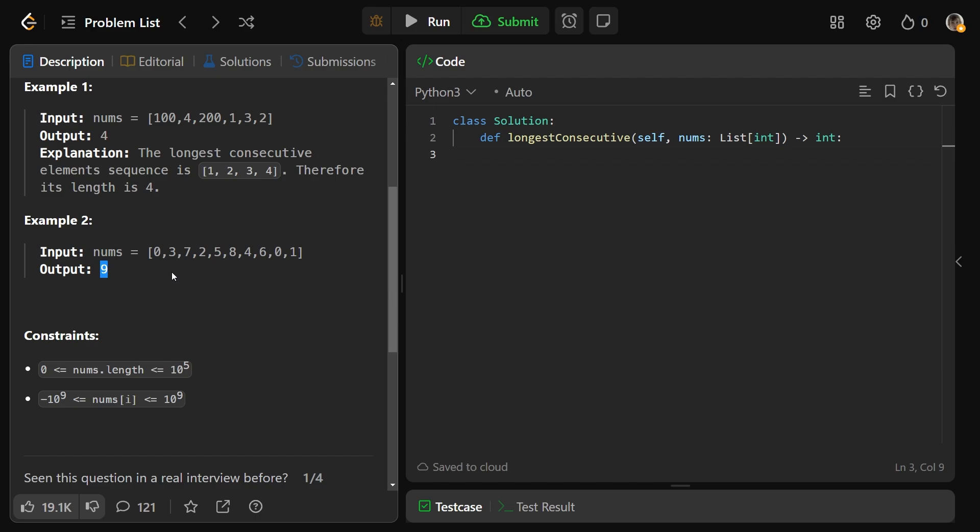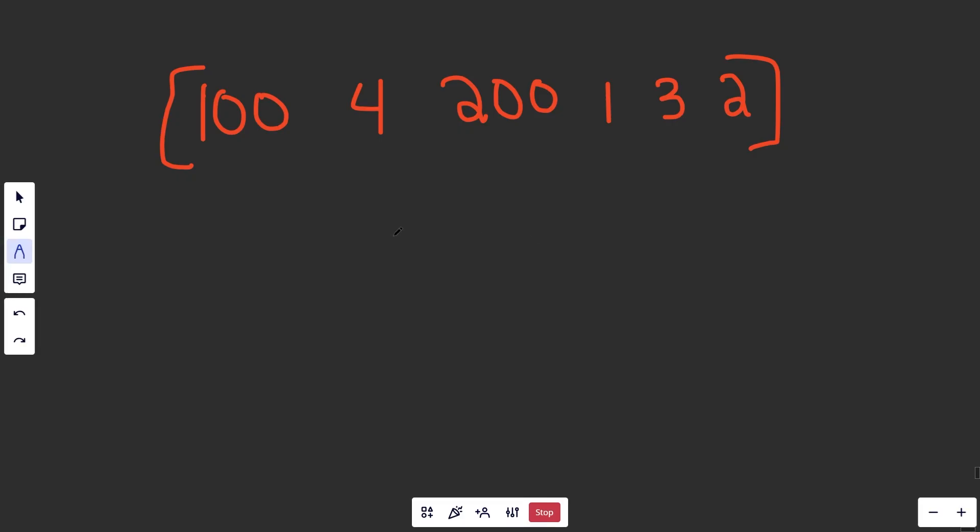Now, the brute force solution would definitely just be to sort this thing, and from there, it's really not that bad. In n log n time, you could sort this array, and you would make it 1, 2, 3, and 4, and at the end, our useless 100 and 200.